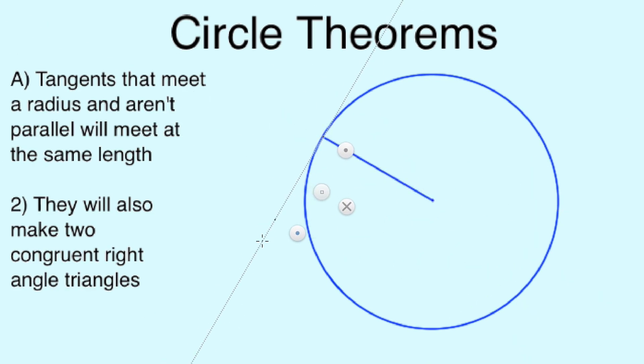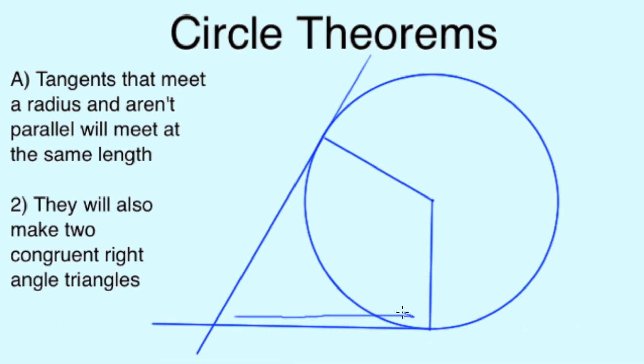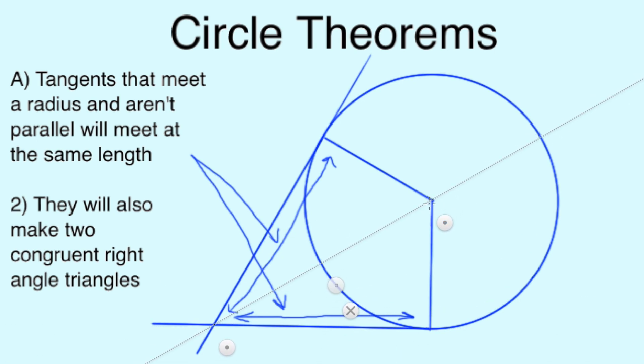Remembering our rule earlier, the tangents which meet a radius line will always make a right angle. If we make two tangents at any angle that aren't parallel, they will eventually meet at exactly the same length. If we draw a line from the center of the circle right to the angle at which the tangents meet, we will make two identical or congruent right angle triangles.